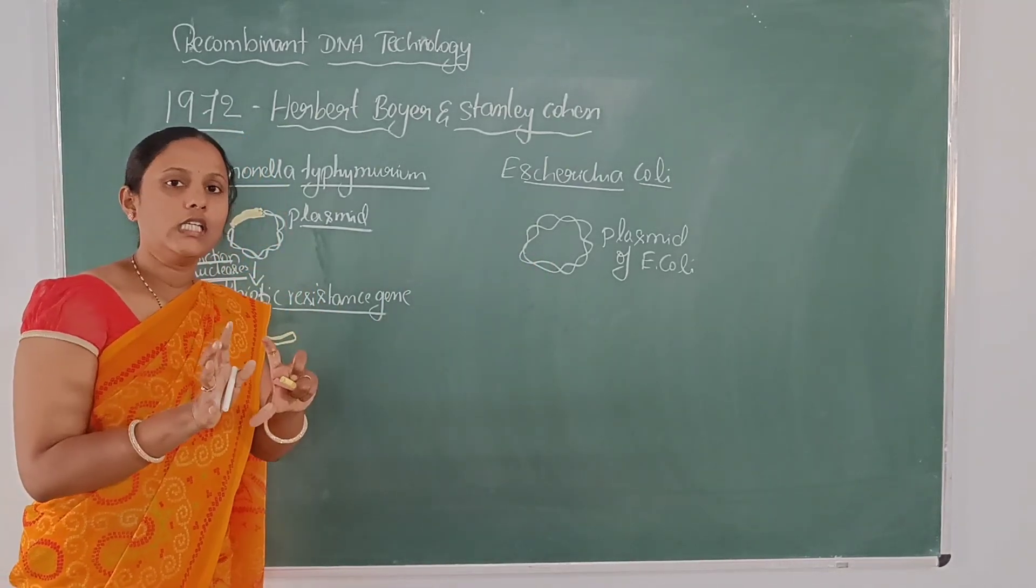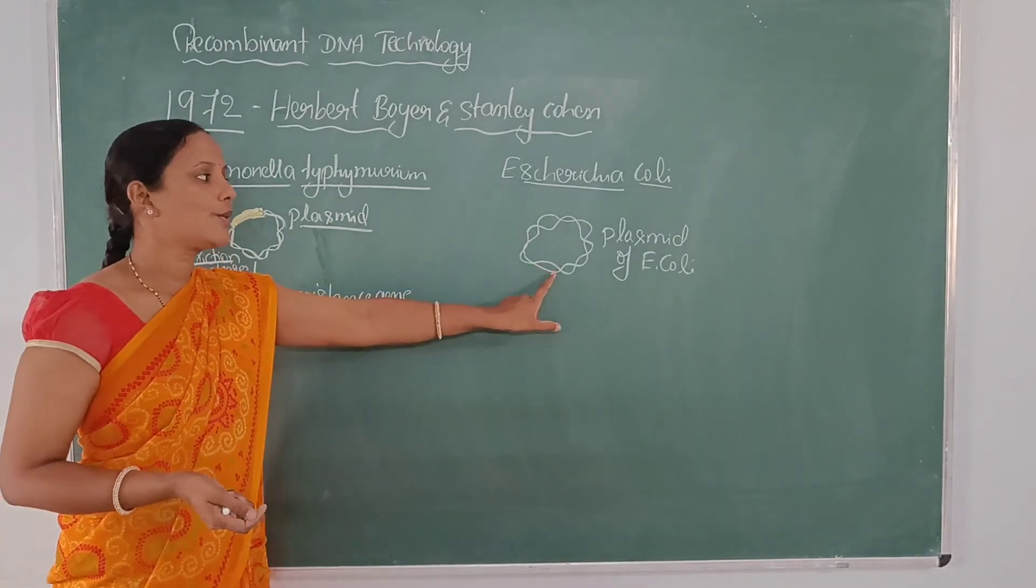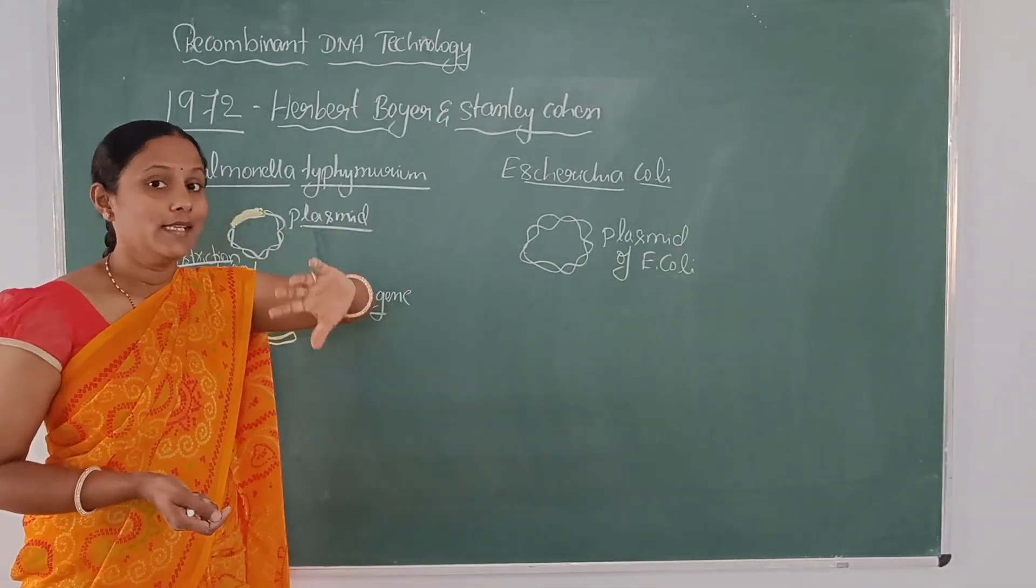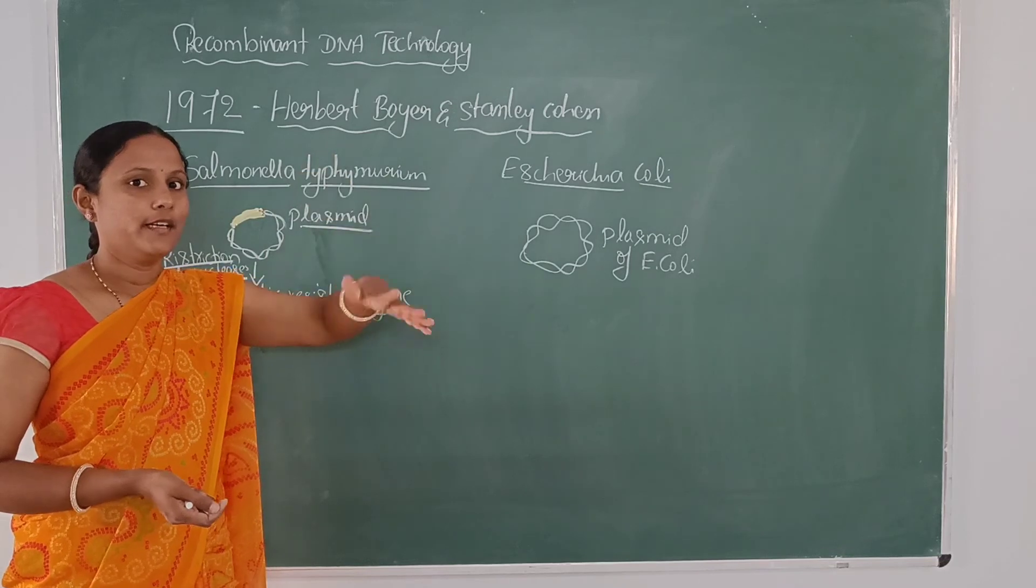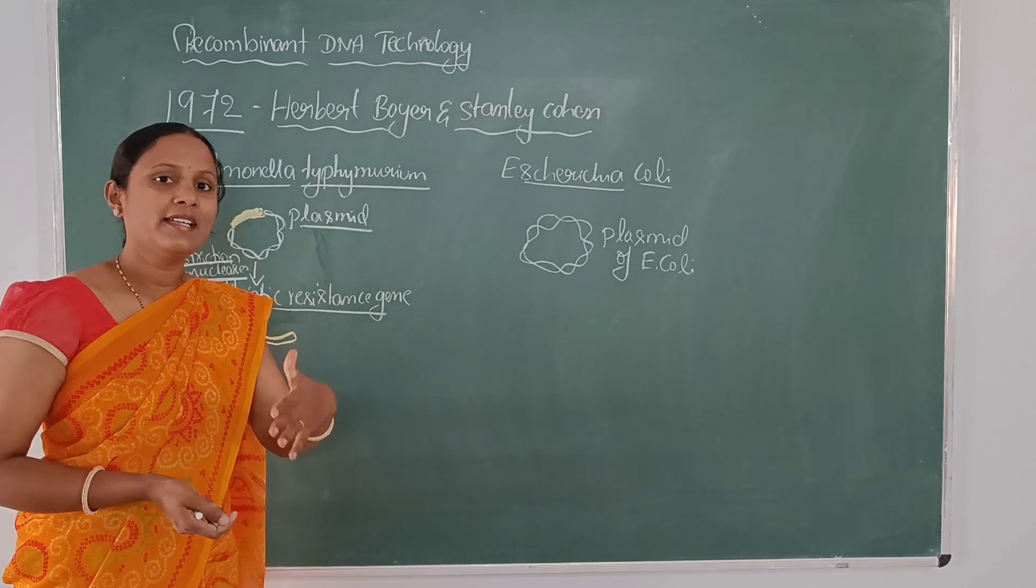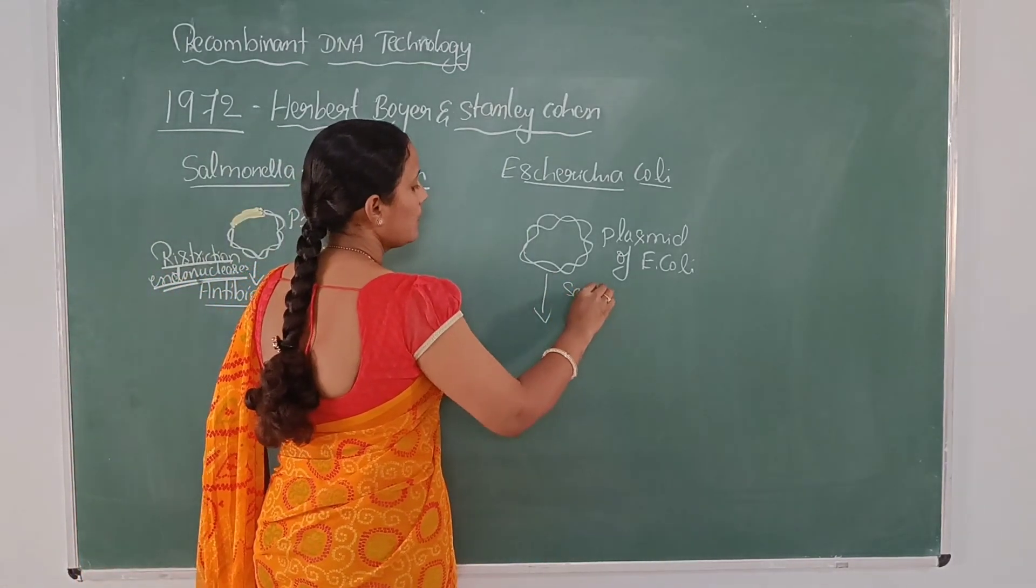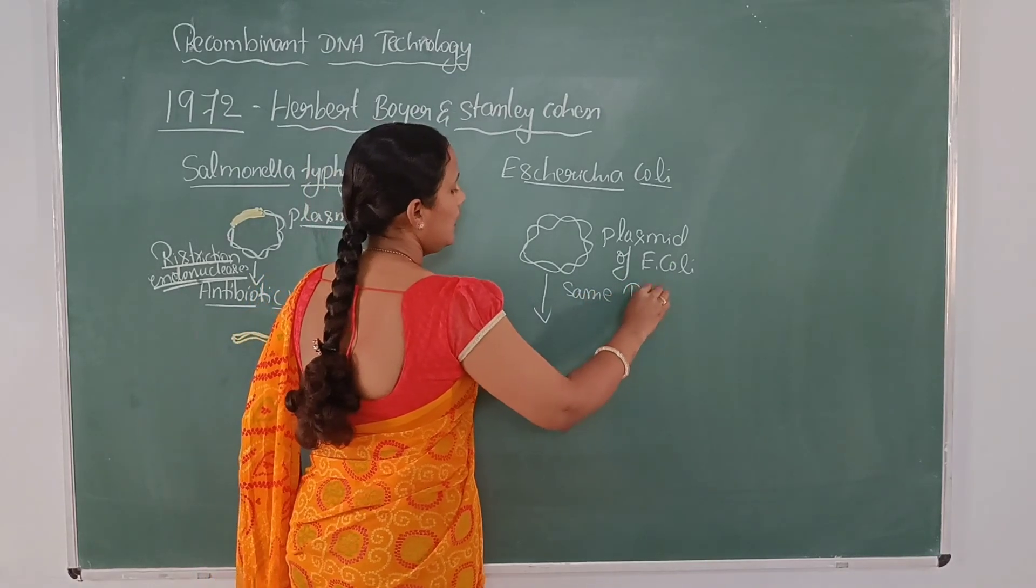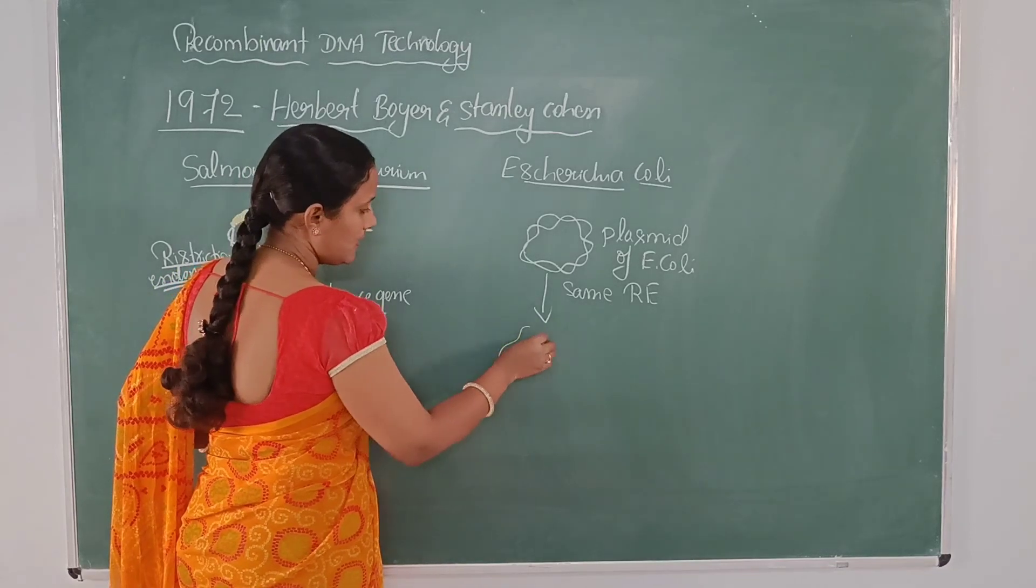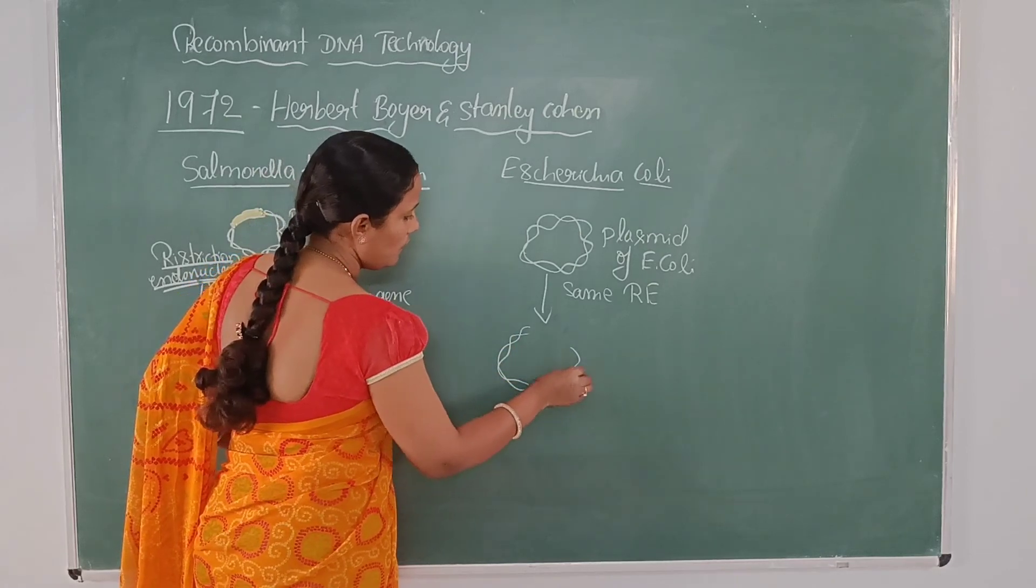For cutting the DNA, I told already, they make use of restriction enzyme. Here also they treat the plasmid with the same restriction enzyme, not a different one. I will say why they have to treat it with the same restriction enzyme later. Here they treat it with the same restriction endonuclease and there is a creation of cut ends.